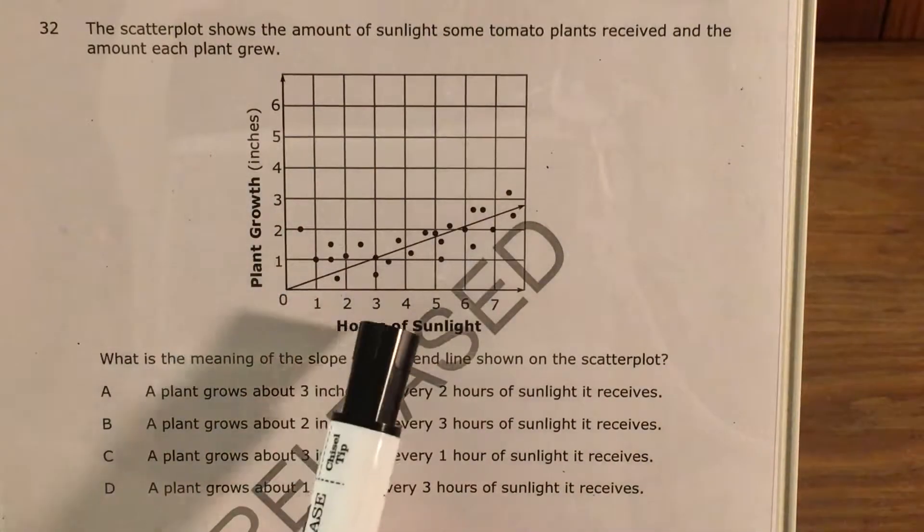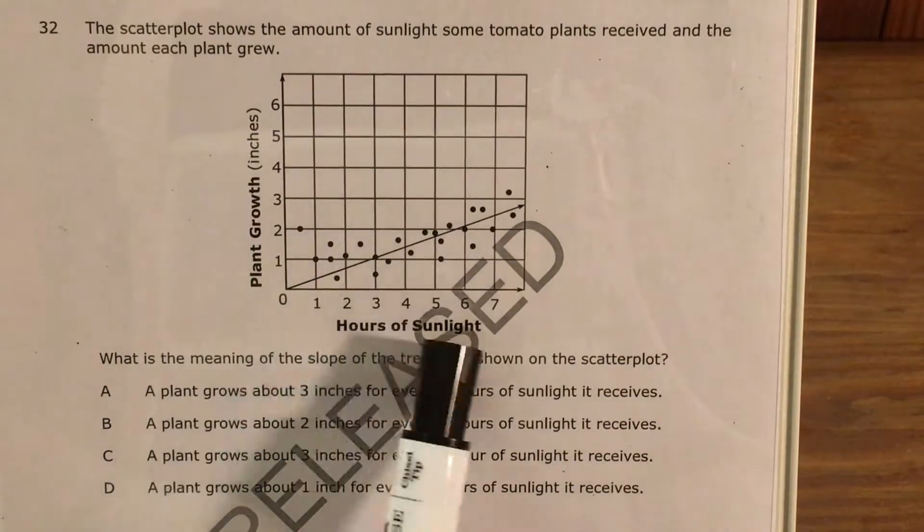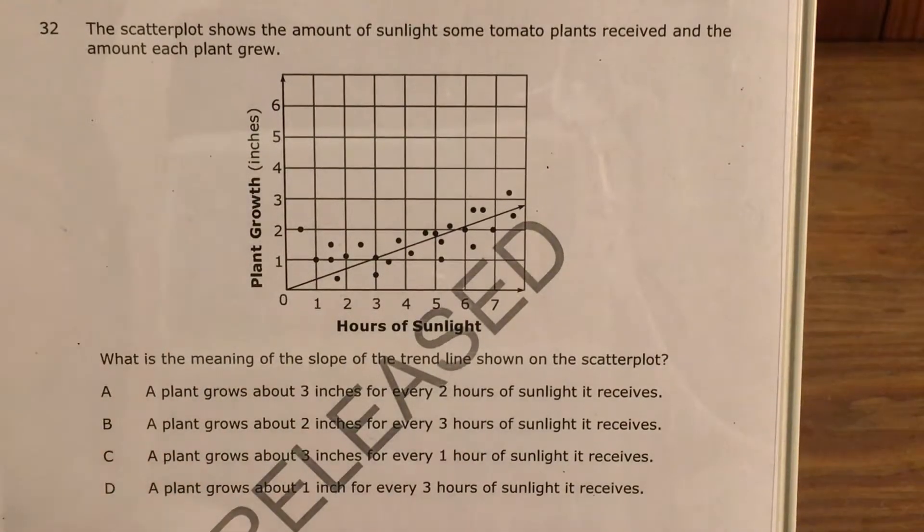Today we're going to tackle question 32 in the 8th grade math questions that North Carolina released this past year. The question gives us a scatter plot which shows the amount of sunlight some tomato plants received and the amount each plant grew.